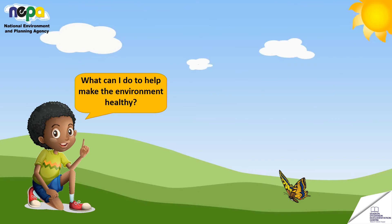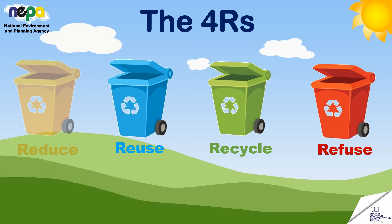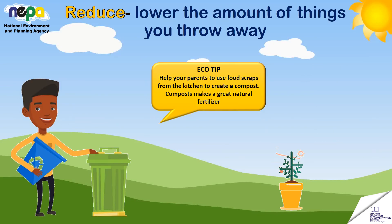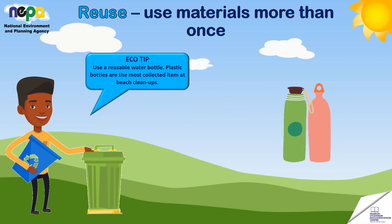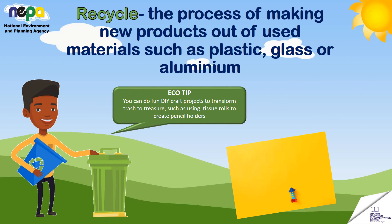What can I do to make the environment healthy? You can start by practicing the four Rs: reduce, reuse, recycle, and refuse. Reduce means to lower the amount of things you throw away. Reuse means to use materials more than once. Recycling is the process of making new products out of used materials such as plastic, glass, or aluminium.